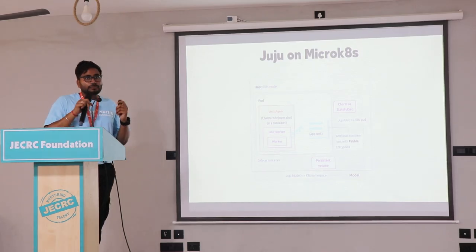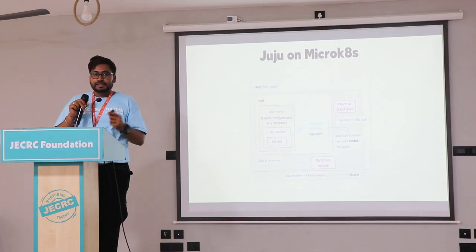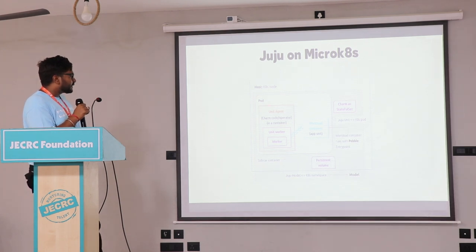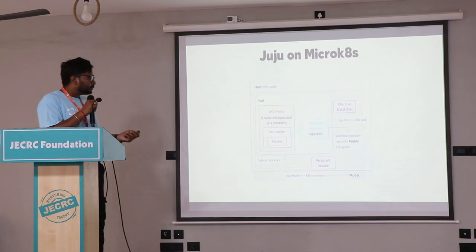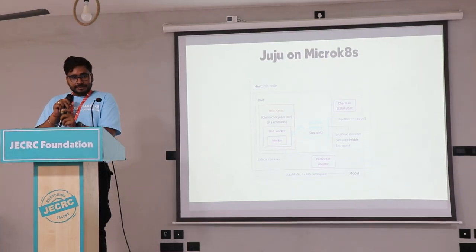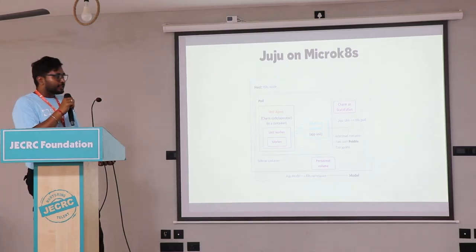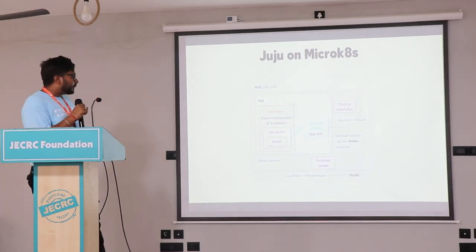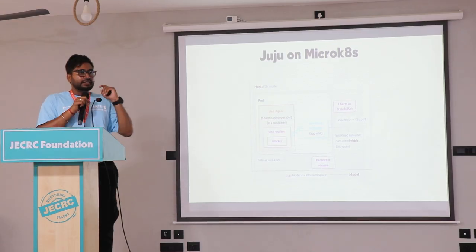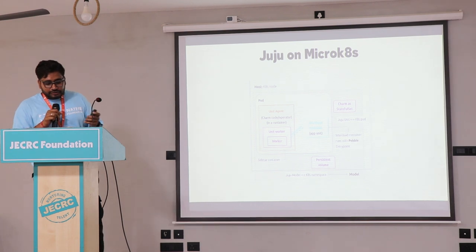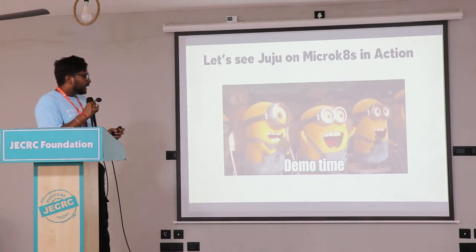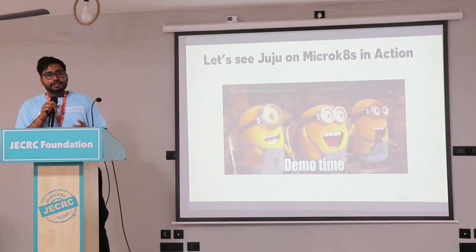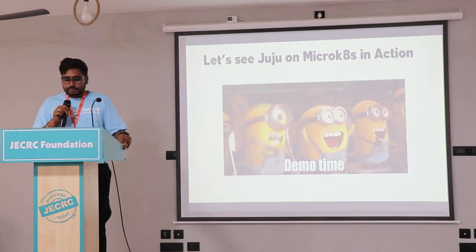Now let's talk about combining Juju and MicroK8s and see how both of these tools work together. If you see here, we have a particular Kubernetes node with pods, persistent volumes, and other resources. As I said, the model in Juju maps to a namespace in Kubernetes. You can't just call it a namespace — in Kubernetes it's a namespace, but in Juju you refer to it as a model. Once you have deployed, you can access the app and see it from the Juju model rather than writing raw kubectl commands. Let's move to the demo part, where we'll show how to install Juju, install MicroK8s, and deploy an application.